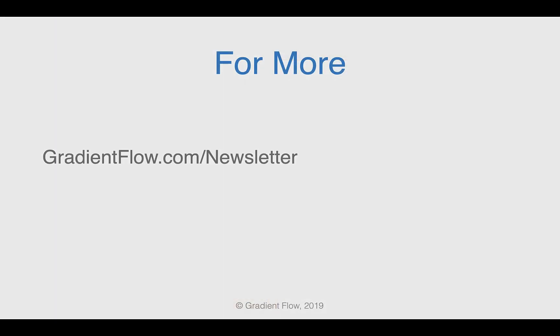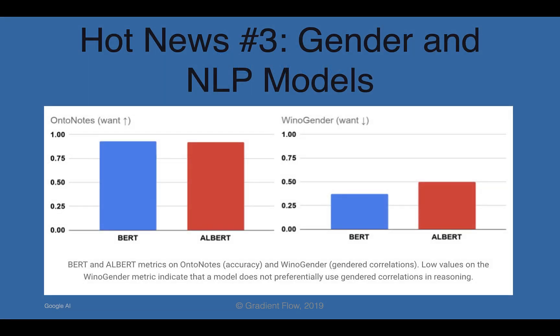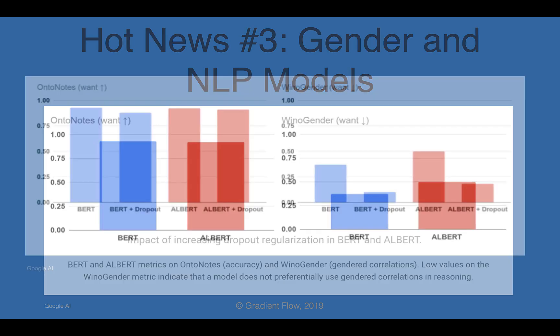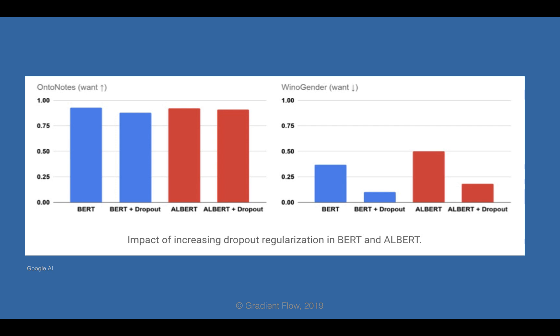A new study from Google measures gendered correlations in pre-trained NLP models like BERT, ALBERT, and XLNet. It presents best practices that can help teams build robust applications and bring responsible AI tools to NLP. The results have real-world applications, as racial and gender bias have been documented in resume job matching software, image captioning, machine translation, and other settings.